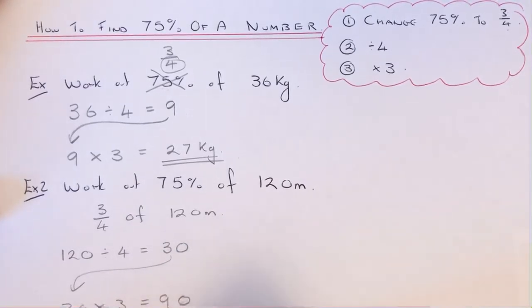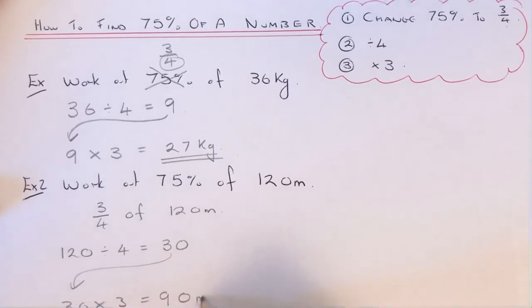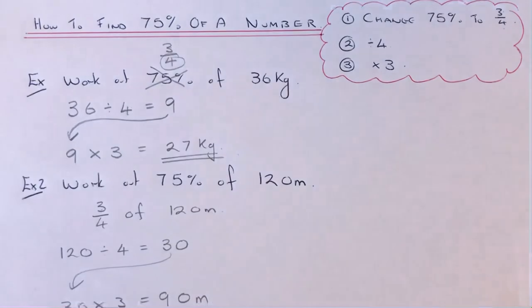Three threes are nine, add the zero, so my final answer is 90 meters. Make sure you like and subscribe, and I'll see you next time. Thanks for watching.